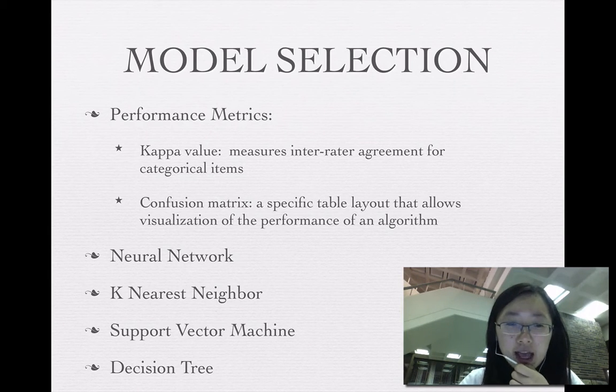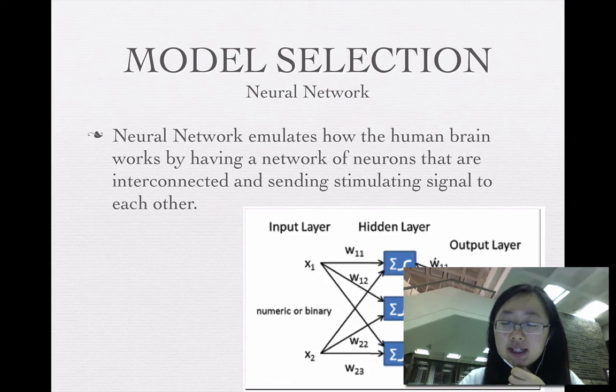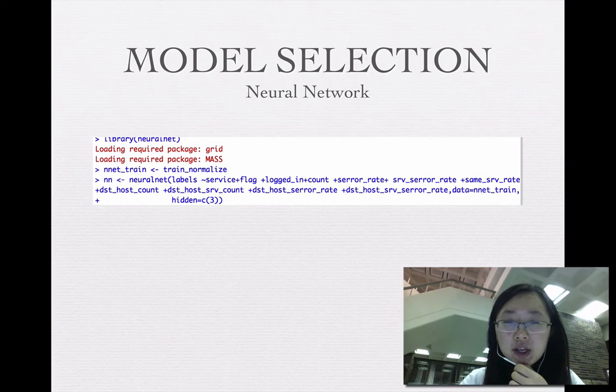And then I use the neural network model, k-nearest neighbor model, support vector machine model, and decision tree model. For the neural network model, it emulates how the human brain works by having a network of neurons that are interconnected and sending simulating signals to each other. This picture shows how the neural network works. This is the code I write to do the experiments.